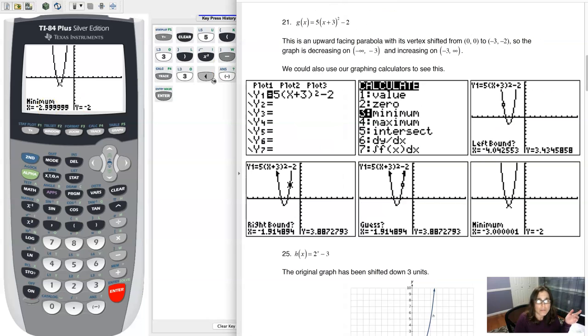So if we look at my solutions after I've graphed that, that's why you see me saying that the interval is decreasing from negative infinity to negative 3, and then increasing from negative 3 to infinity.